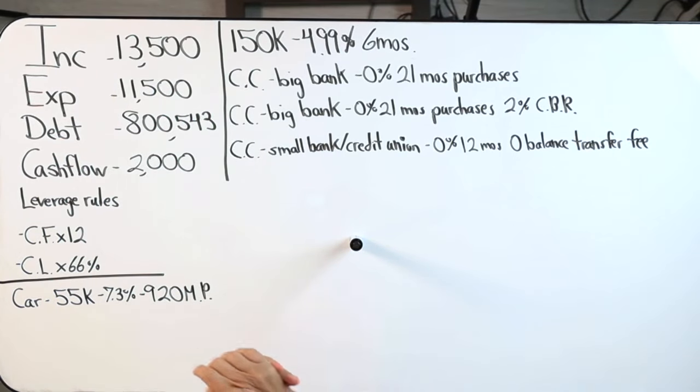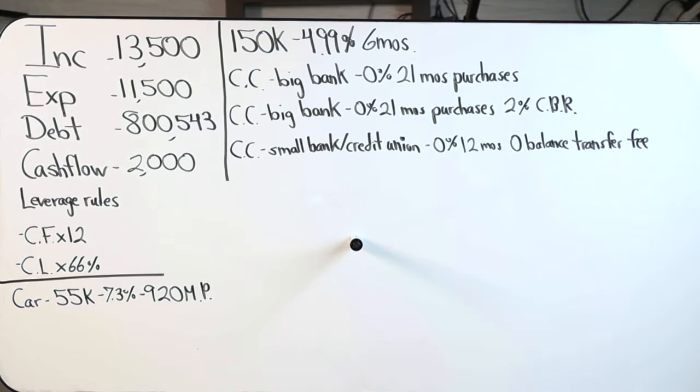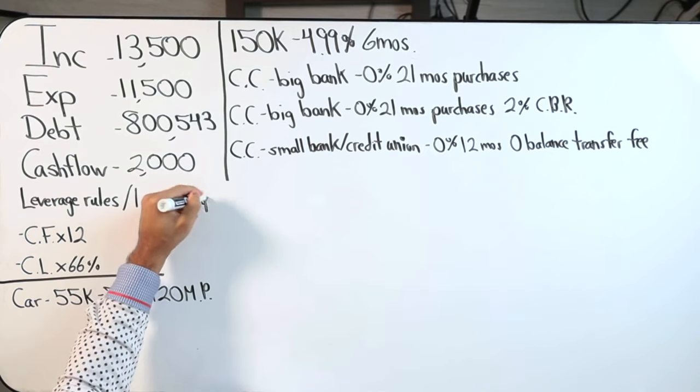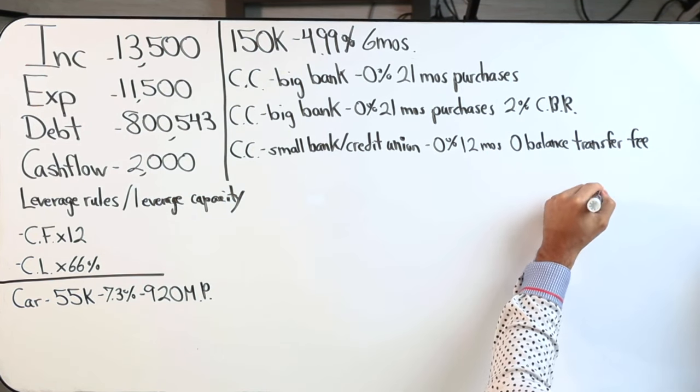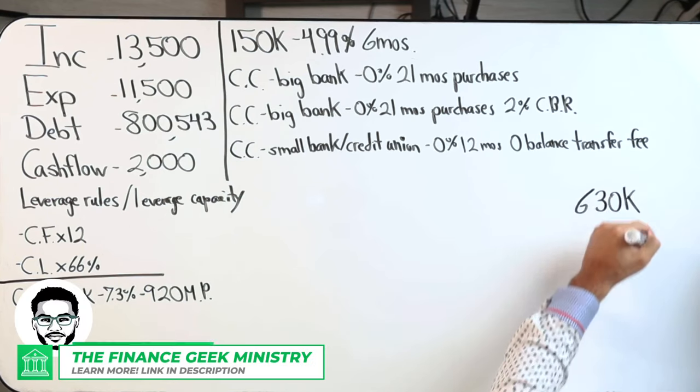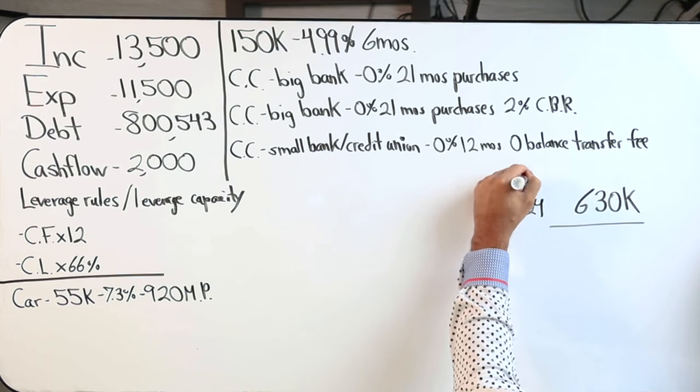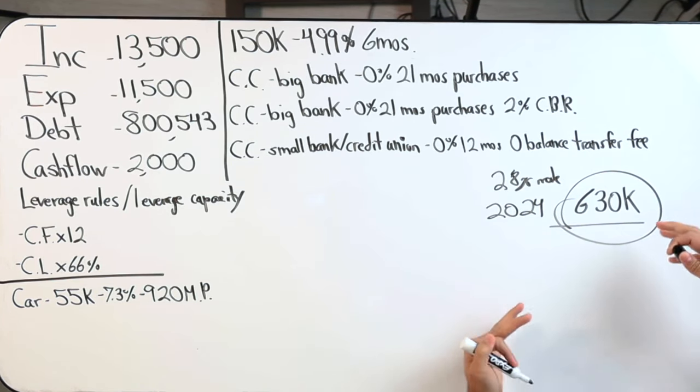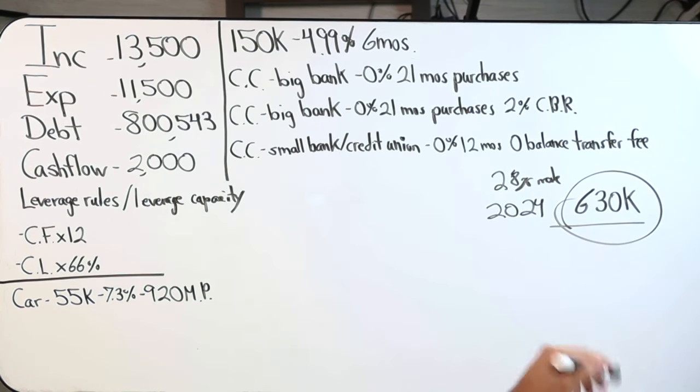$800,000 of debt. Leverage rules - very important. You need to know the leverage rules. You have to know your leverage capacity. I can tell you with full confidence, my leverage capacity as of today in 2024, as a 28-year-old male, young guy, engaged, the max amount of debt I'm willing to put myself in is $630,000.